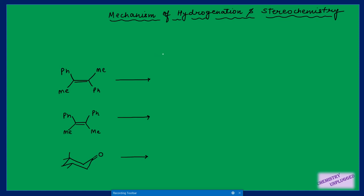Hello friends, welcome back to my channel. Today we are going to start chapter number 7, covering heterogeneous hydrogenation and homogeneous hydrogenation. First we will take how heterogeneous hydrogenation takes place and what are some important stereochemistry points about that.